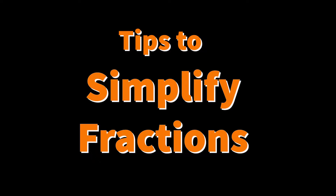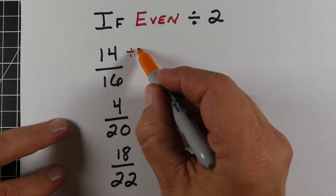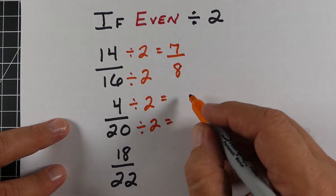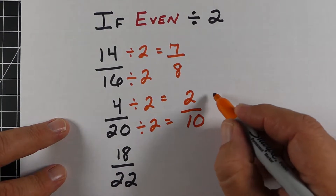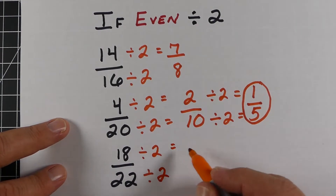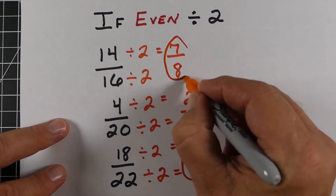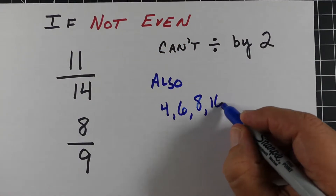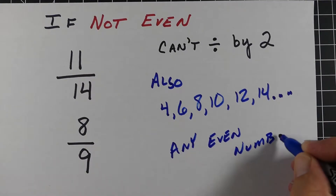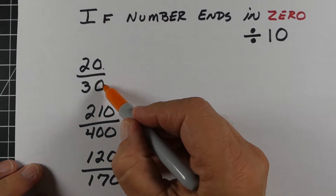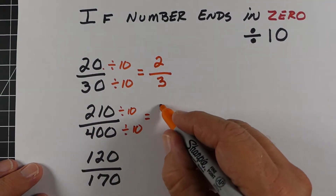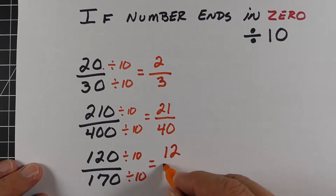Here are some tips to simplify fractions. Any number that's even, we can always divide by two — even if it's not the best number to divide by, it's a good way to get numbers a little smaller. Four-twentieths became two-tenths, and we divide by two again to get one-fifth. Eighteen-twentieths — divide by two — we get nine-tenths. If one or both numbers are odd, you can't divide by two, which eliminates half your options. Anytime you see a number ending in zero, we know we can divide by ten, and sometimes by 20 or 30 or more.